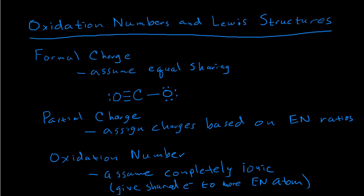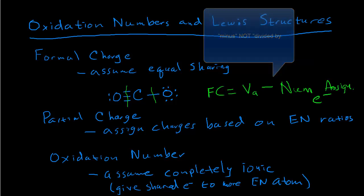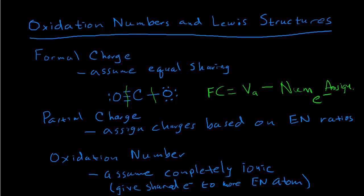Let's look at three different ways of talking about charge in a molecule. First, formal charge: we assume that electrons shared between atoms in a Lewis structure are shared equally. Using this bond-cutting method on carbon dioxide, we slice up the electrons in each bond, and the formal charge equals the atom's normal valence electrons minus the number of assigned electrons — where shared electrons are split equally between bonded atoms.